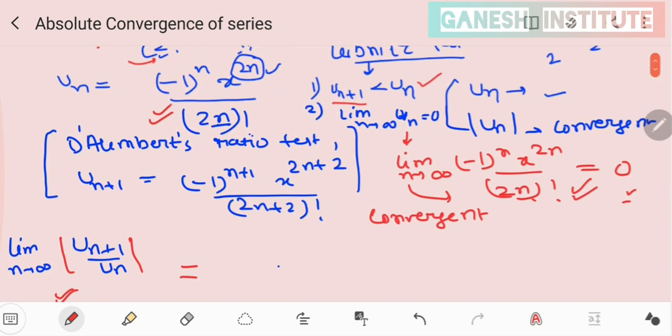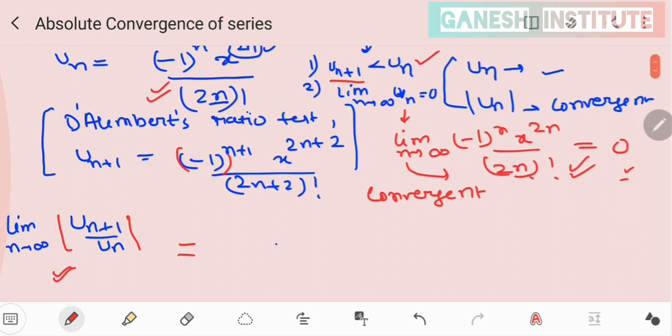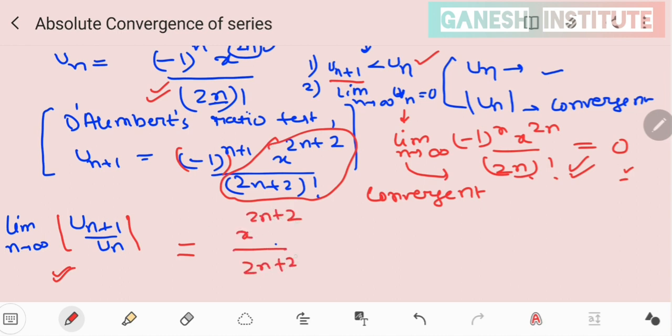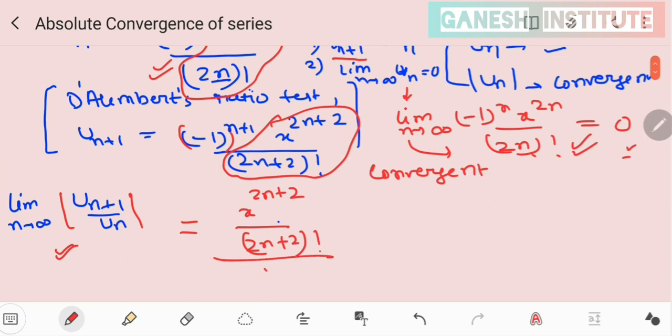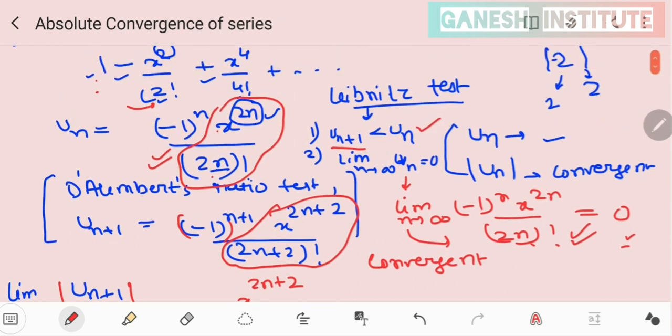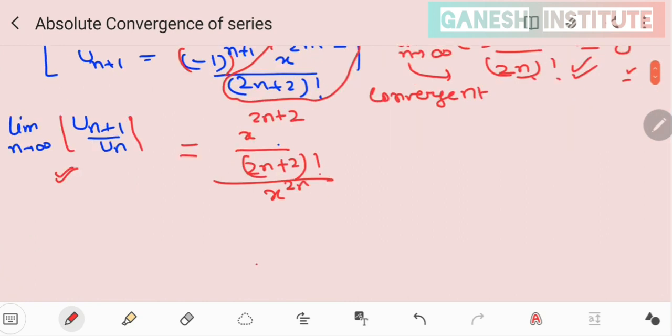So if you see, this minus 1 factor, if you are taking modulus, then minus 1 will be removed, because we only need to take positive value. Simply, this form we will take. So x raised to power 2n+2 by 2n+2 factorial, this is for u_n+1. And for u_n, you have this value, which is x raised to power 2n by 2n factorial.